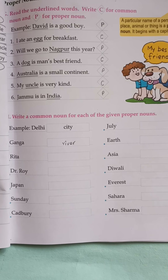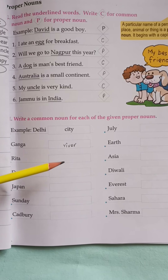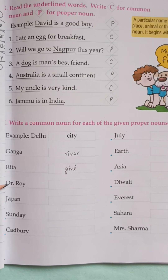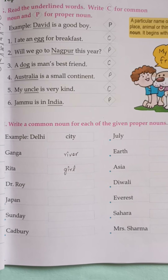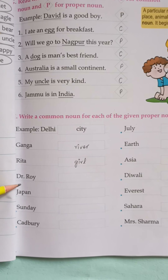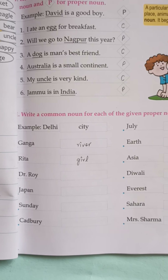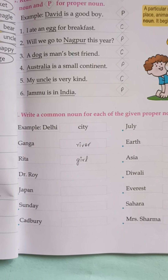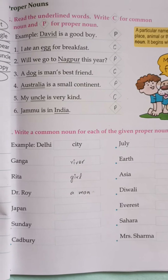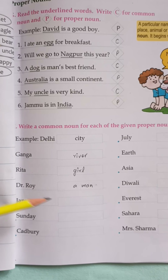Girl — the common noun here is girl. Doctor Roy — Doctor Roy is a person's name, but what we will say as the common noun is a person, or a man. Here we will say a man.